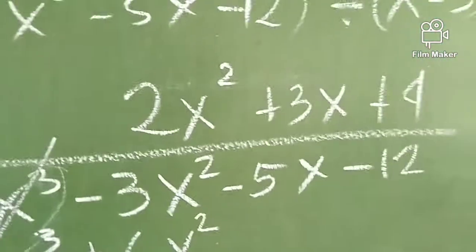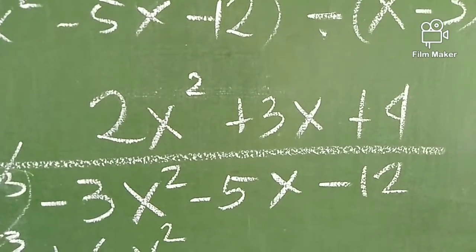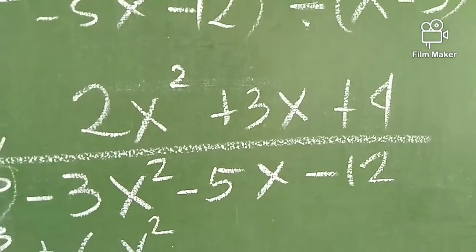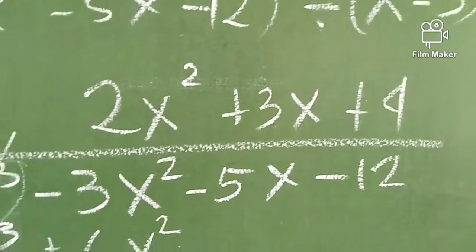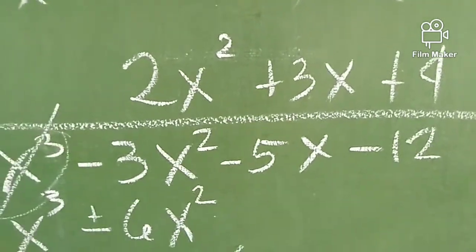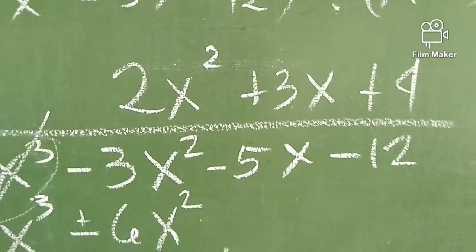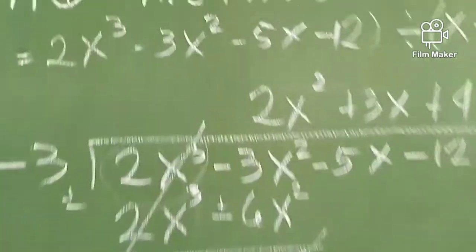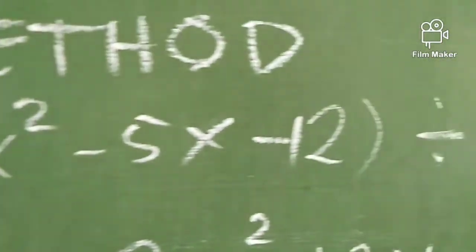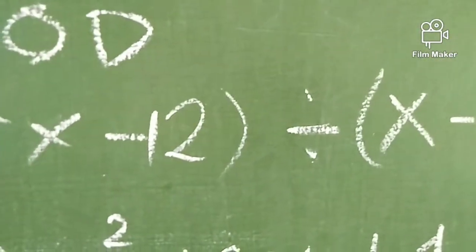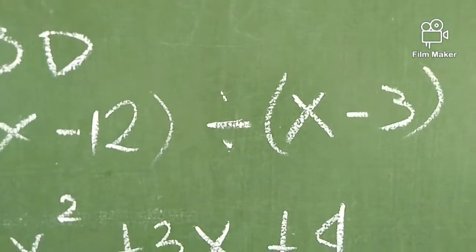At ang naging sagot po natin is 2x squared plus 3x plus 4. Para mas maintindihan nyo pong mabuti, kindly ulitin po ninyo ang video na ito, panoorin ninyo ulit. Tandaan nyo mabuti itong binigay ko sa inyo na problem kasi ito din po ang gagamitin kong problem sa next topic po natin.